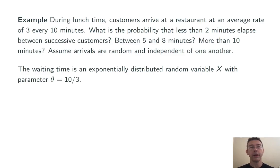So we're given the mean rate at which the customers arrive. So we have the parameter theta is 10 over 3, which gives us immediately our CDF, 1 minus e to the negative 3 tenths times x. And with that, we can compute the three probabilities we need.